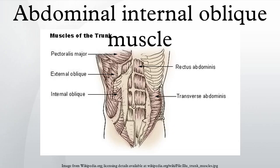Function: the internal oblique performs two major functions. Firstly, as an accessory muscle of respiration, it acts as an antagonist to the diaphragm, helping to reduce the volume of the thoracic cavity during exhalation. When the diaphragm contracts, it pulls the lower wall of the chest cavity down, increasing the volume of the lungs which then fill with air. Conversely, when the internal obliques contract, they compress the organs of the abdomen, pushing them up into the diaphragm, which intrudes back into the chest cavity reducing the volume of the air-filled lungs, producing an exhalation.